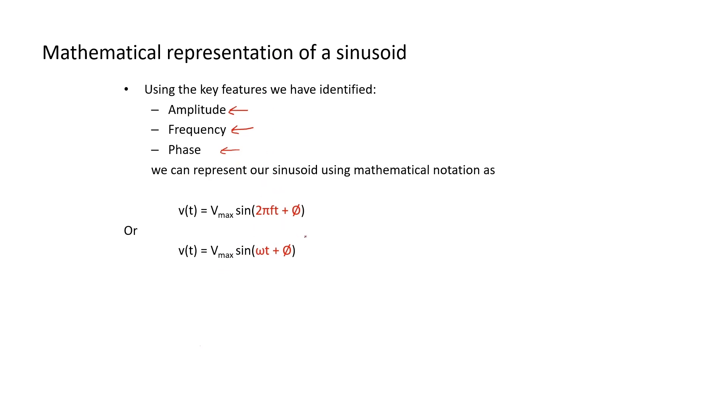If we have all that information, we can represent our sinusoid using one of these two expressions. Basically, the voltage at any given time is equal to the amplitude or the peak voltage times sine times what's in these brackets. And we can see we have frequency. This is our variable, the time we're interested in, and our phase shift. It's worth noting here our frequency is in hertz and our time will be in seconds. What we can do is say that 2πf is equal to ω, which is our angular frequency. So ω equals angular frequency is equal to 2πf, and it has a unit of radians per second.